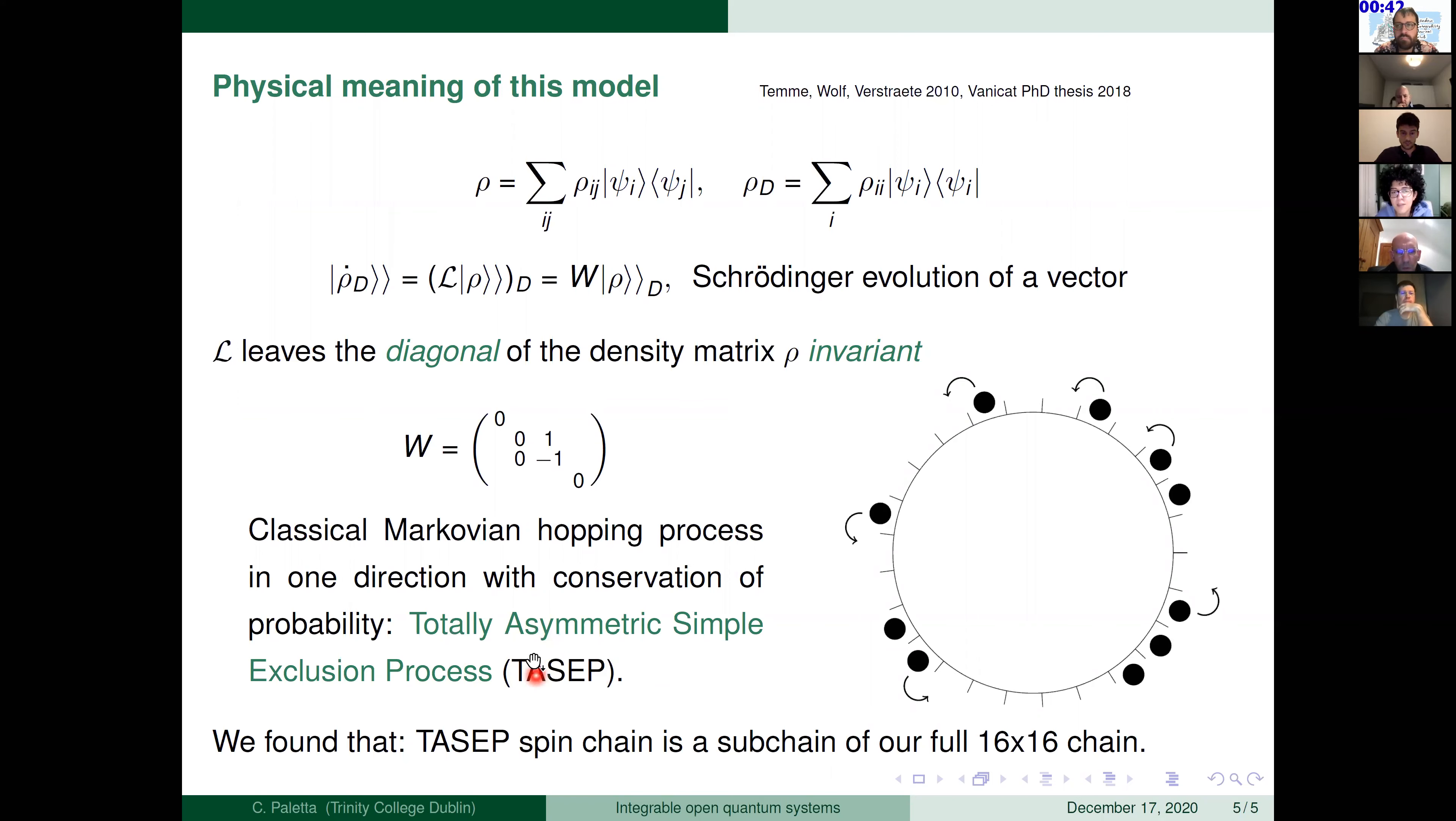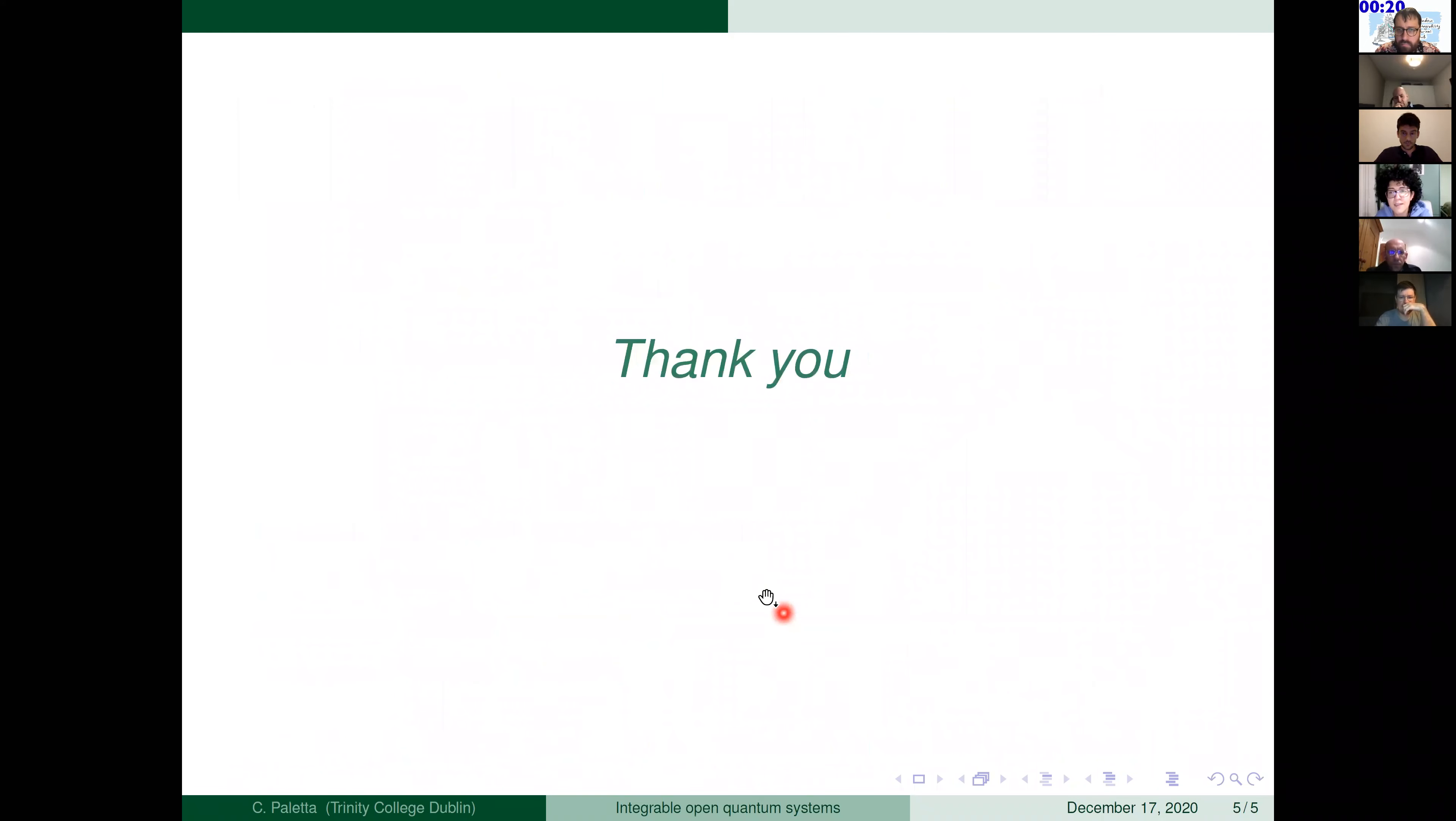So using that method, we found this very nice model. This is one of the models we found and we decided to show this because it was very simple and nice. So with this method, we could find this new model. And also we found that the TASEP spin chain is a subchain of our 16 by 16 chain. And thank you.